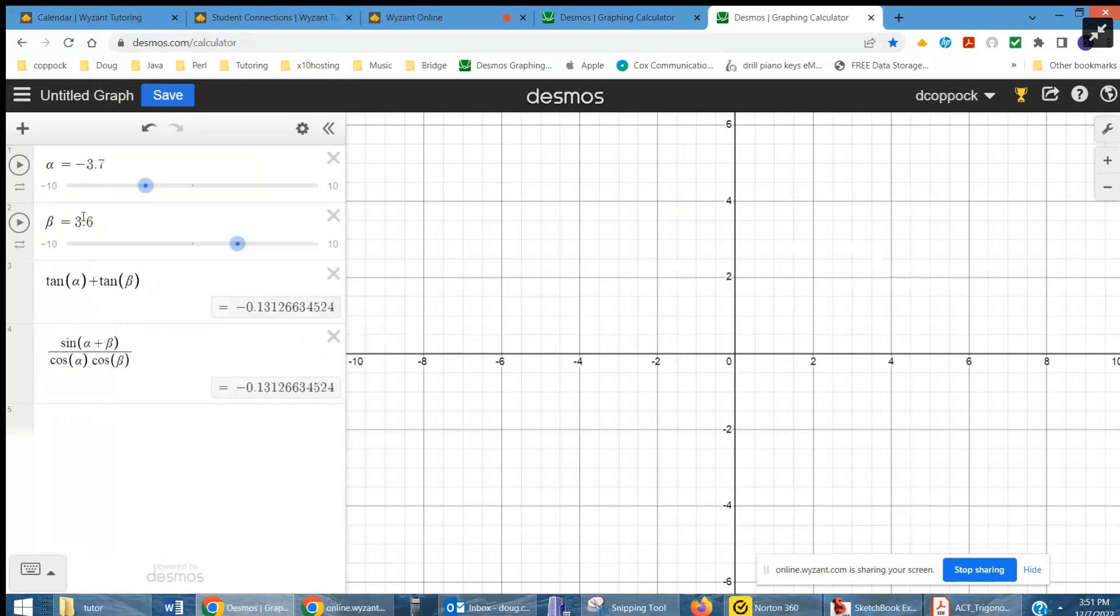Here are values for alpha and beta in radian mode, and here are the two expressions we're trying to show are equal. No matter the values for alpha and beta, these expressions always end up having the same value.